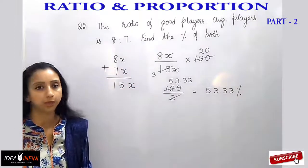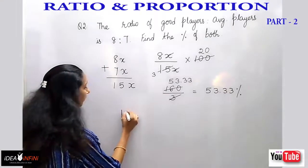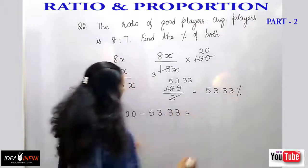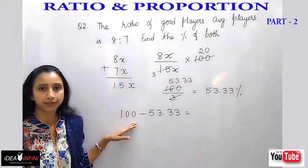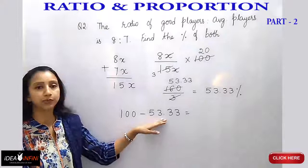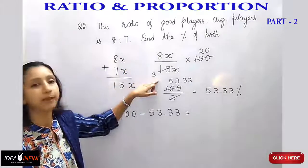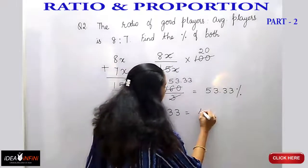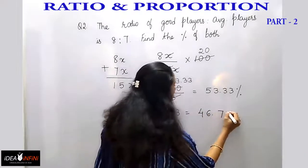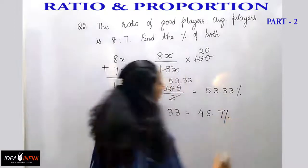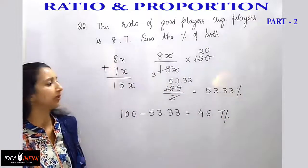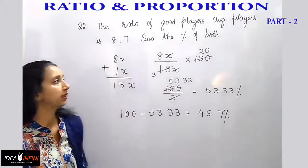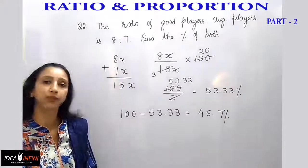To find the percentage of average players, simply subtract 100 minus 53.33, since 100% is always the full percentage. Alternatively, you can calculate 7x by 15x into 100 to get the same answer. Either way, it comes out to 46.7% for average players.